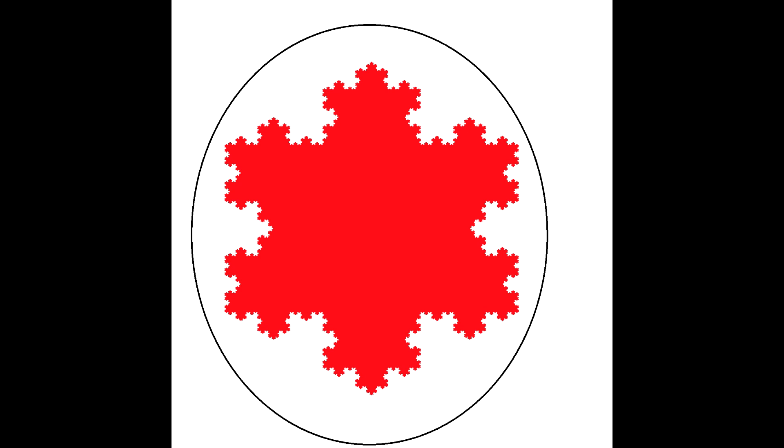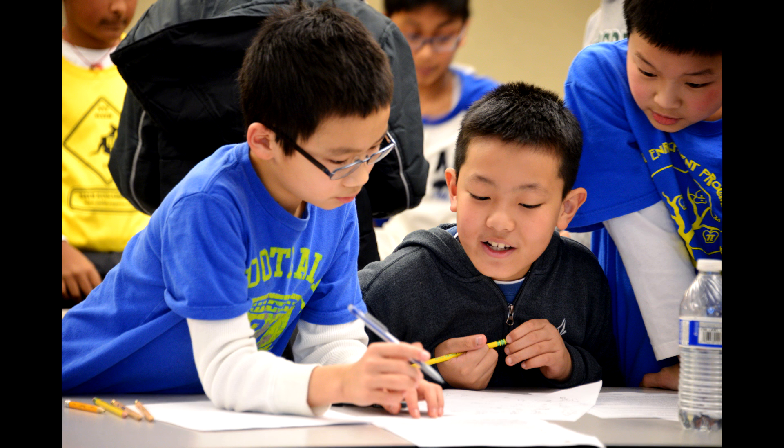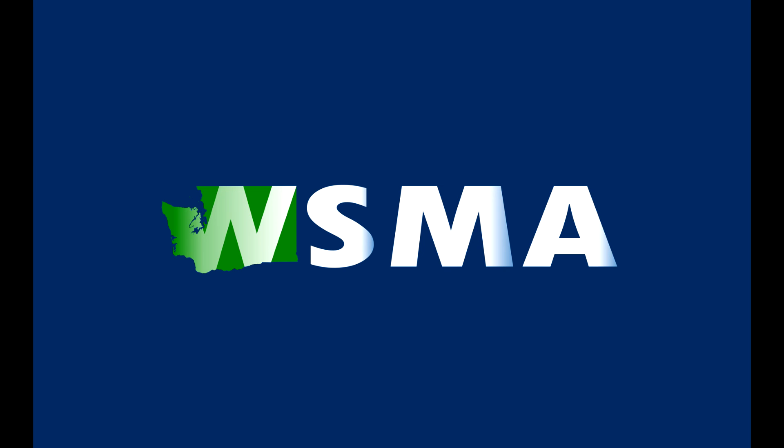So what can we conclude from this video? Well, we have learned that we were able to enclose a shape that requires an infinitely long string to create with a fixed amount of string. Therefore, we have shown a shape with finite area but infinitely long perimeter.